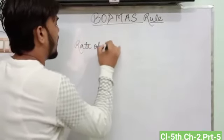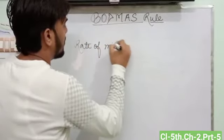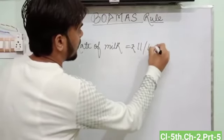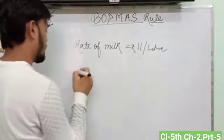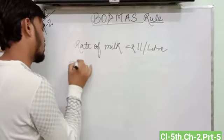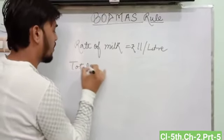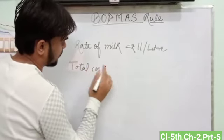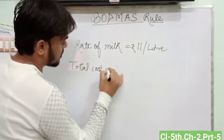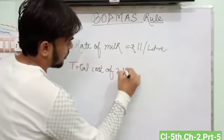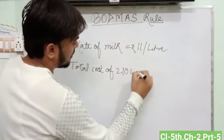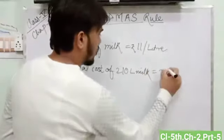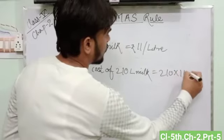The rate of milk is equal to Rs. 11 per liter. So total cost of 210 liters of milk is equal to 210 into 11.